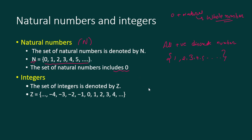Now let's talk about integers. In integers, the positive numbers, zero, and all the negative numbers are included. So when we include all the negative numbers along with natural numbers, it becomes integers. Integers are denoted by Z.